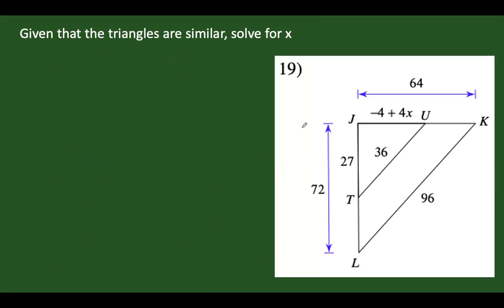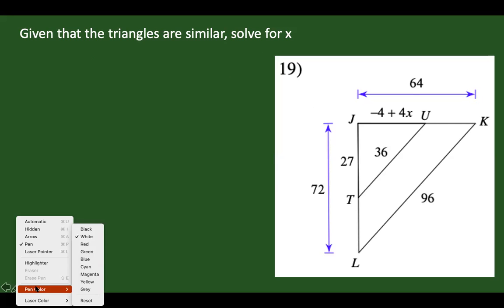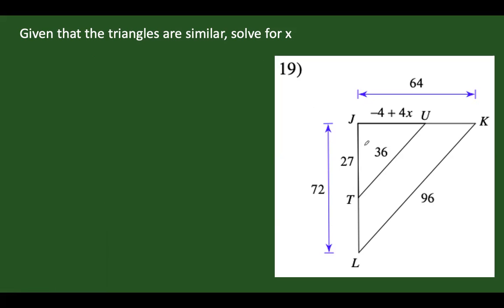Again, the given triangles are similar. These two triangles are similar, which could be proven by AAA or SAS since we have an included angle, and we can say that these two lines are parallel.